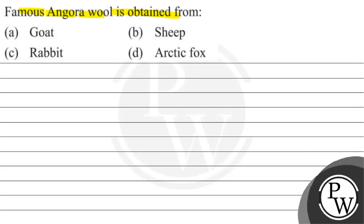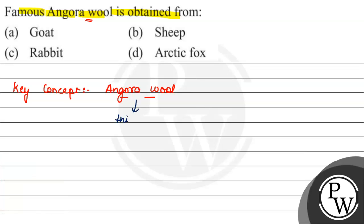The question asks which animal Angora wool is obtained from. Our key concept here is Angora wool. Angora wool is a thin, fine, stranded fiber. It is thin and fine, its appearance is shiny, and its nature is soft.